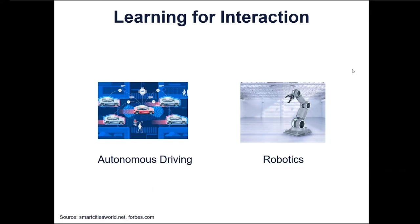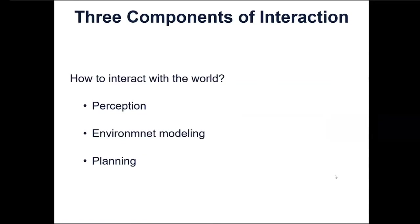People have already seen many applications of deep learning in computer vision and natural language processing, for example, object recognition and machine translation. However, in those tasks, the intelligent agents play passive roles — they wait for inputs and answer via neural networks. Different from those tasks, many other problems such as autonomous driving and robotics require the agent to interact with the environment and make a sequence of decisions while watching for changes in the environment. This raises the question: how can we apply learning algorithms for interaction tasks?